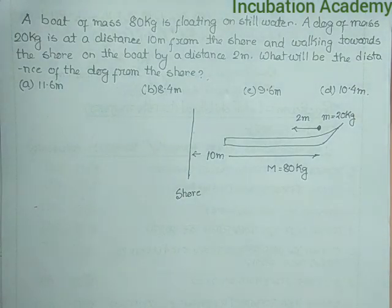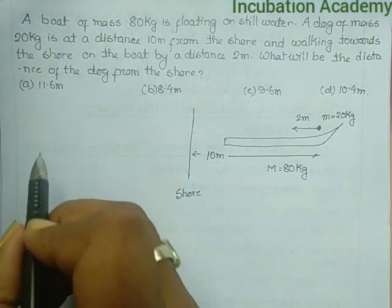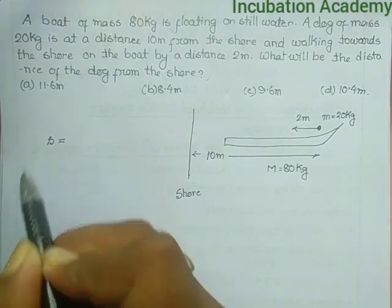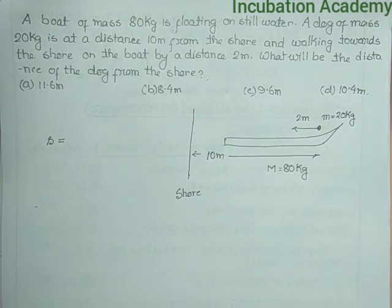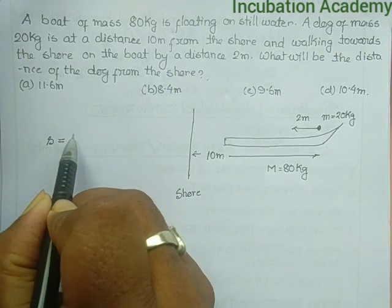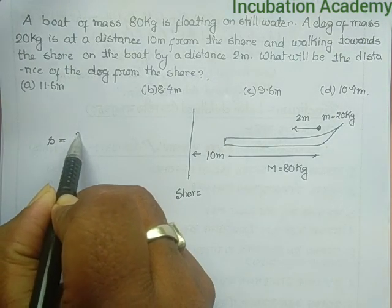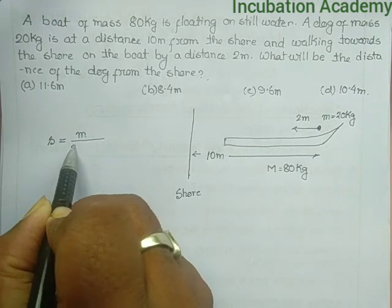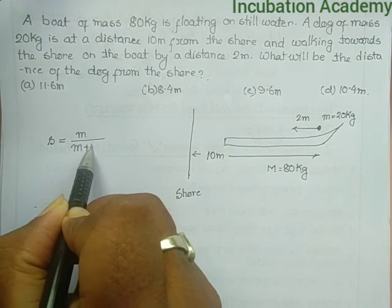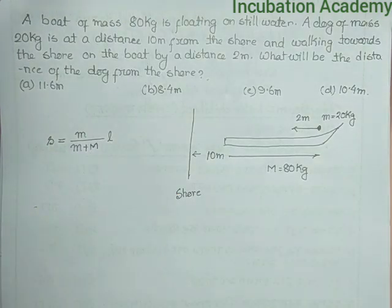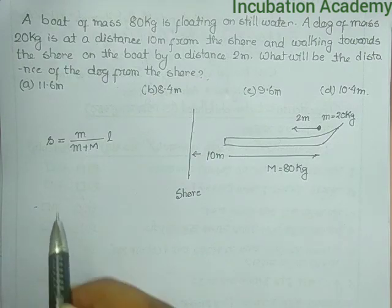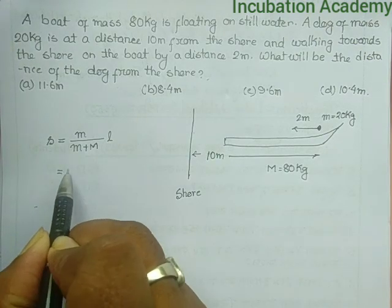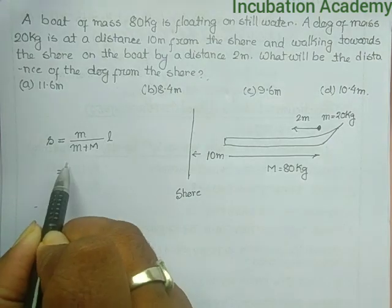So the displacement of the dog will be: small m divided by (small m plus capital M) multiplied by small l. So small m is 20, capital M is 80.